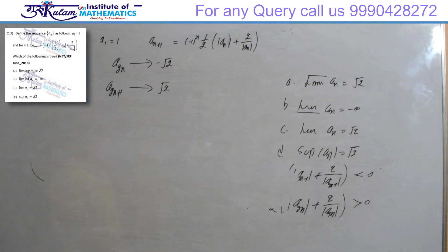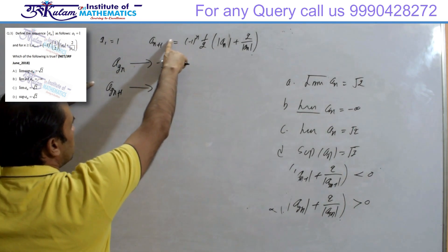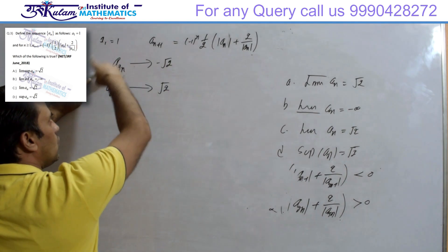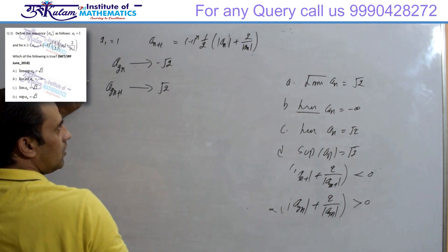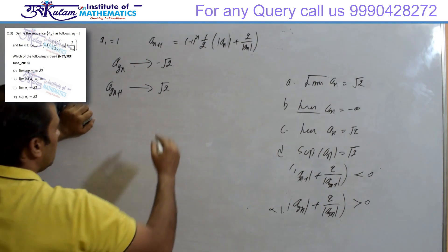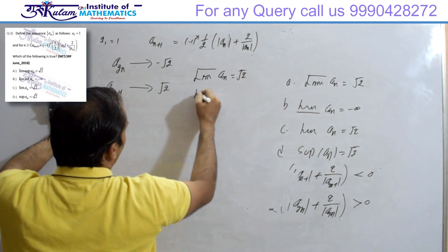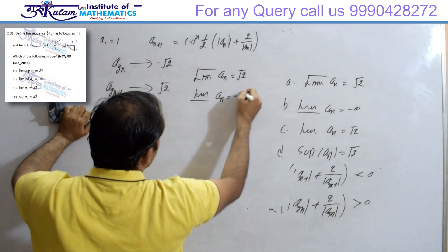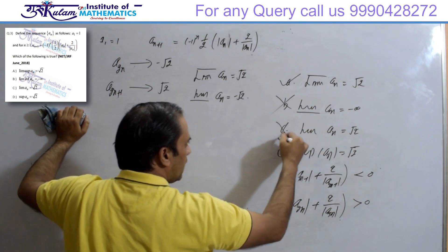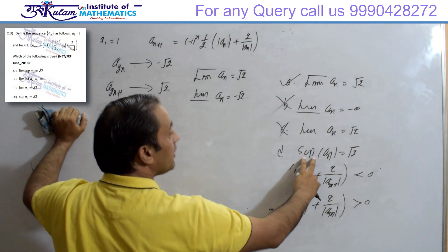So the largest limit point of the sequence is √2 and the smallest is -√2, because these are two complementary subsequences. When complementary subsequences converge, the sequence has exactly those limit points. Therefore lim superior of a_n = √2 and lim inferior of a_n = -√2. Option A is true, option B is false, and option C is false because with two distinct limit points the sequence cannot converge.